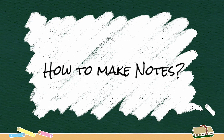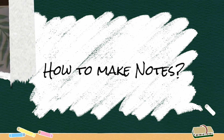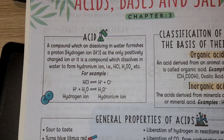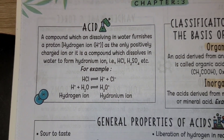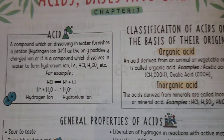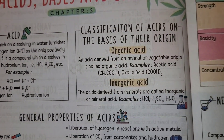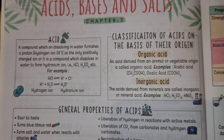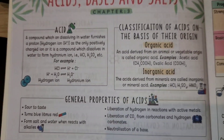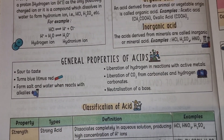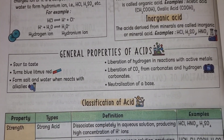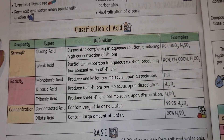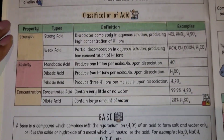Today I'll show you how to make amazing and crisp notes. This is a book from Oswal Gurukul, and this is the portion I'm showing you — that is from 'Chapter at a Glance.' You can see how beautifully they've given the definition of acid, a few examples, classification of acid on the basis of their origin, general properties of acids with cute pictures, and everything is in tabular form.